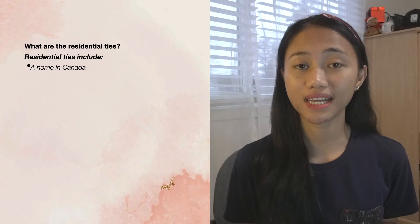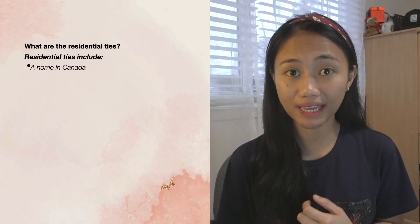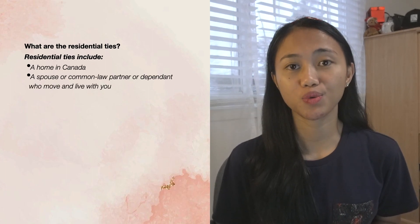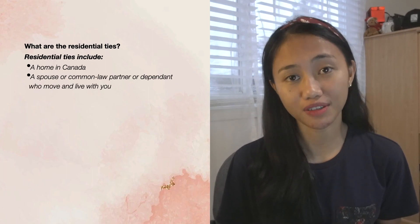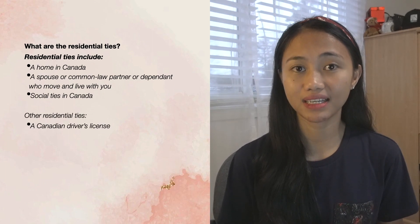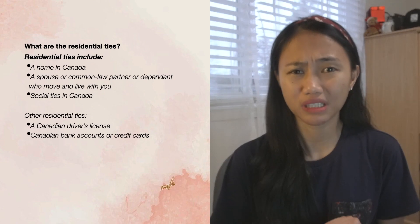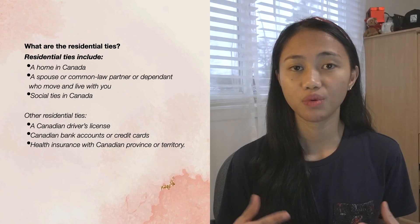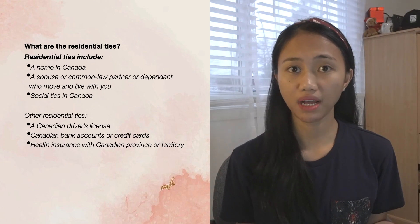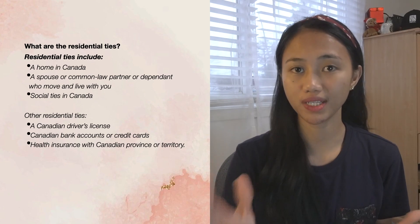What are those residential ties? Residential ties include a home in Canada, a spouse or common-law partner or dependents who move to Canada to live with you, social ties in Canada, a Canadian driver's license, a Canadian bank account or credit card, and health insurance with a Canadian province or territory. And going back to determining your residency status as an international student, there are four categories you might fall into.